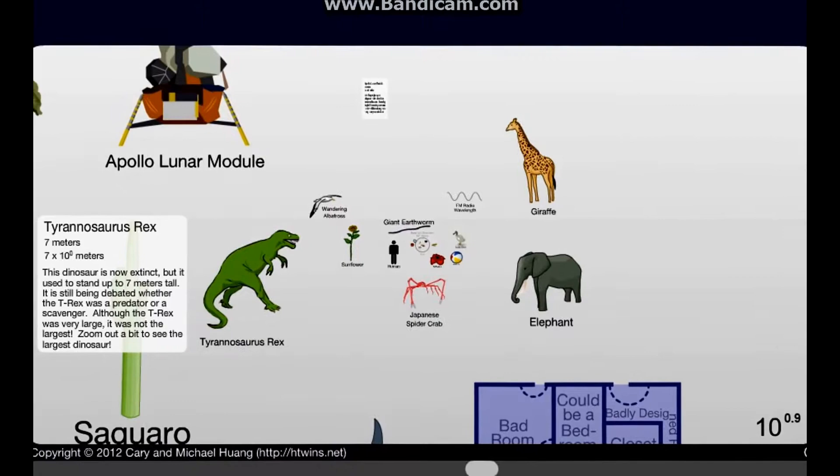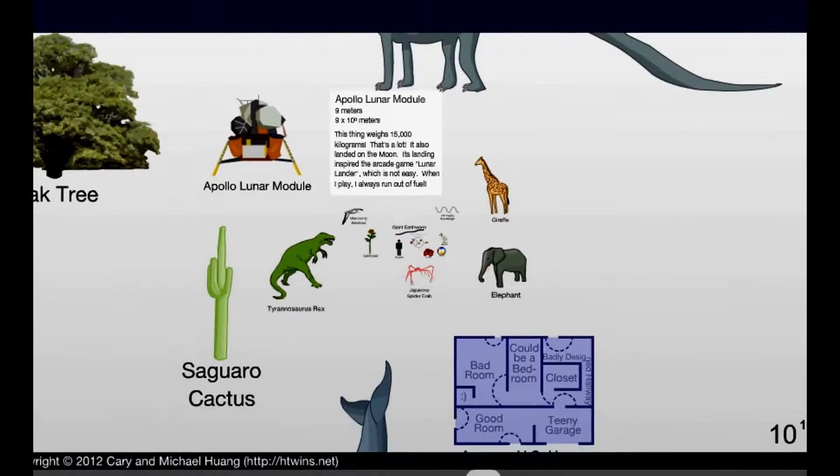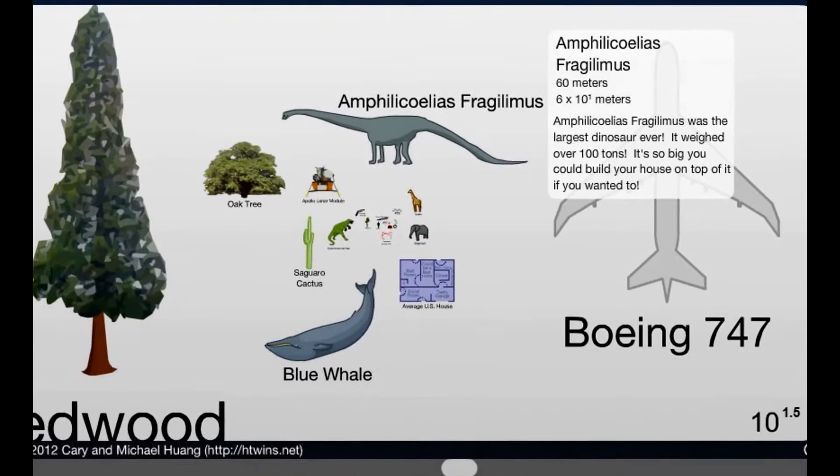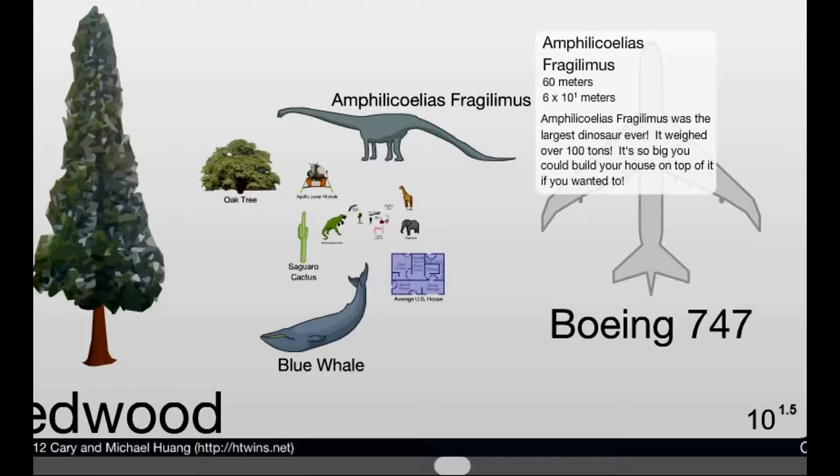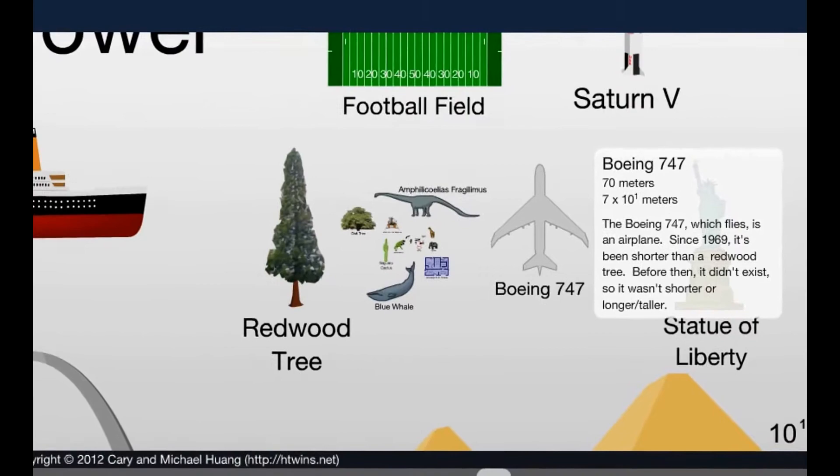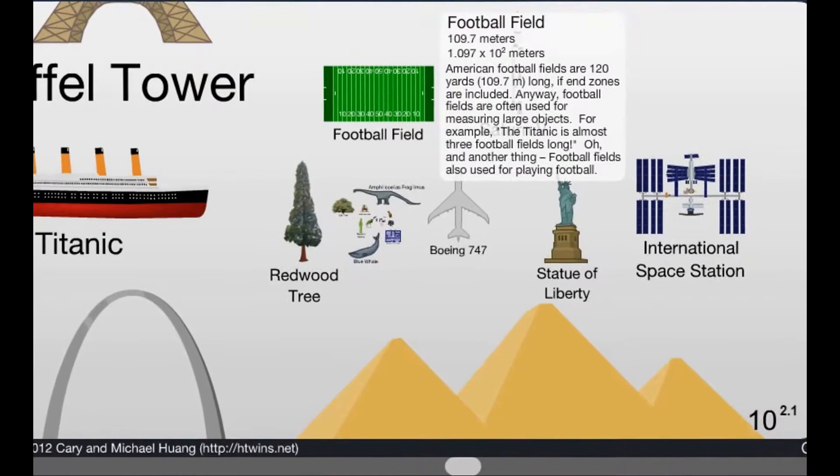Apollo Moon Lander. Nine meters. Then we got this big bastard right here. I don't even know how to pronounce this. But I know it's a sauropod. And I know they're big. That's bigger than a blue whale by 30 meters. And this thing rocked the earth. That is insane. Then you got a Boeing 747 at 70 meters.